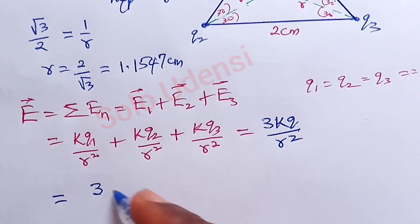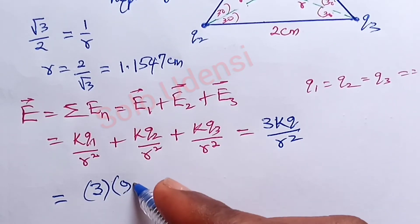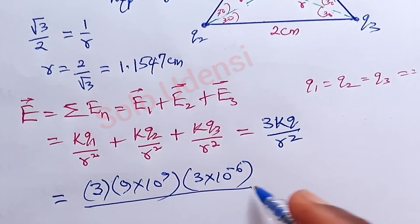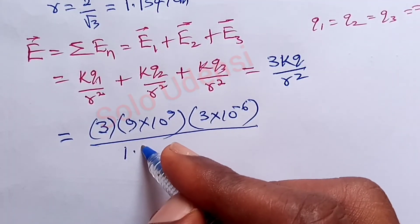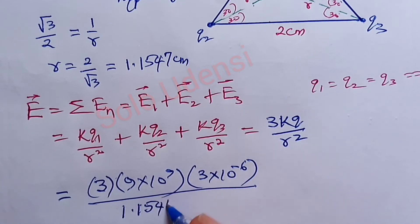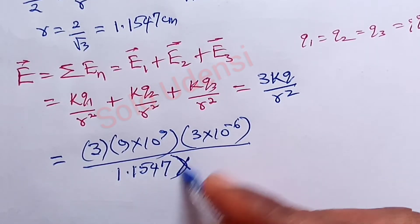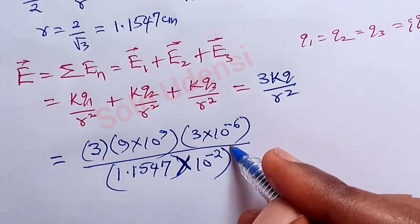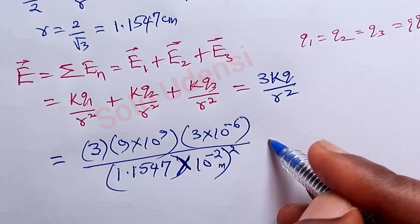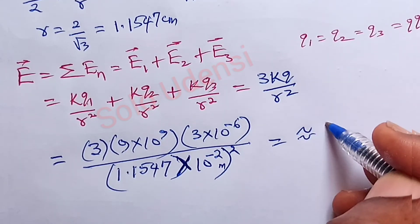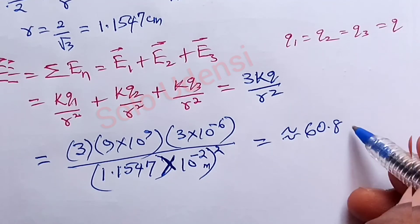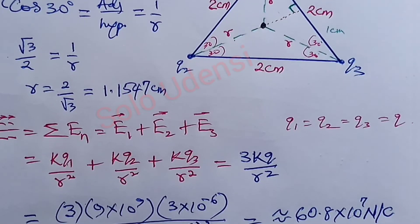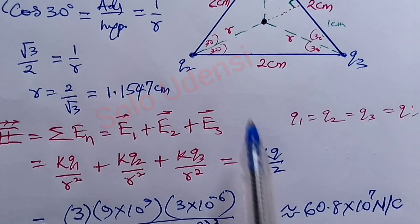Substituting the values: E equals 3 times 9×10⁹ times 3×10⁻⁶, all over (1.1547×10⁻² )², converting centimeters to meters. This gives approximately 60.8×10⁷ Newton per coulomb. This is how to solve this type of problem — it's straightforward once you know the basic math.